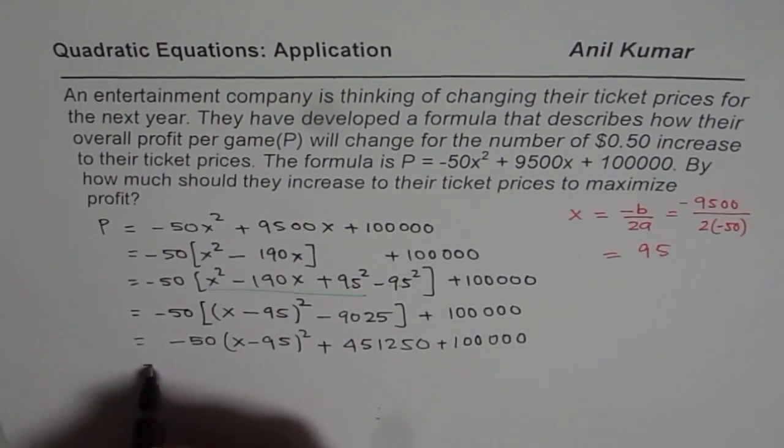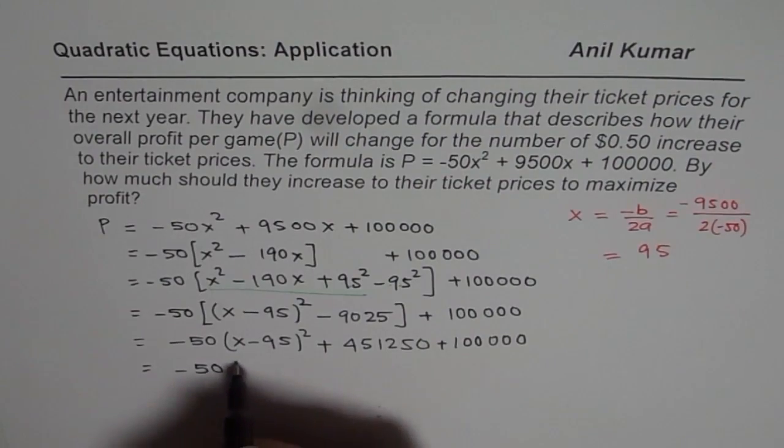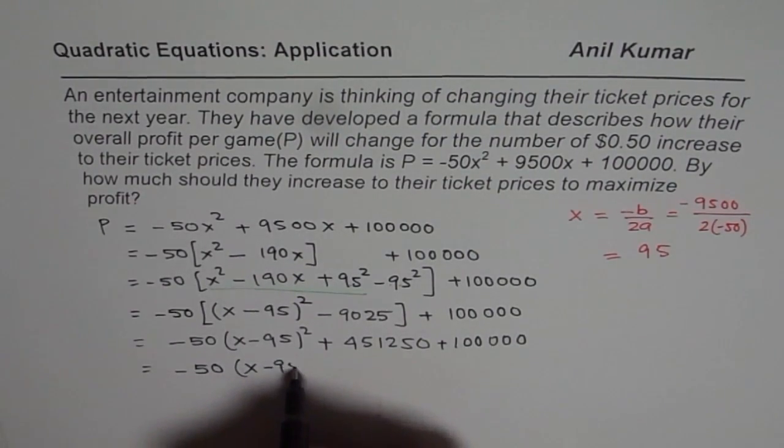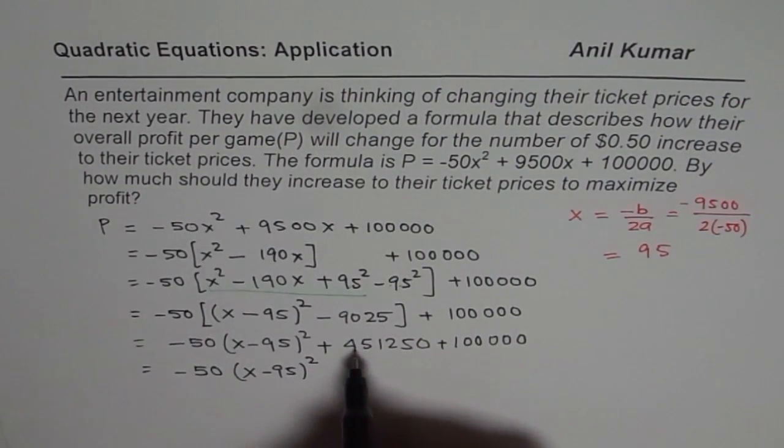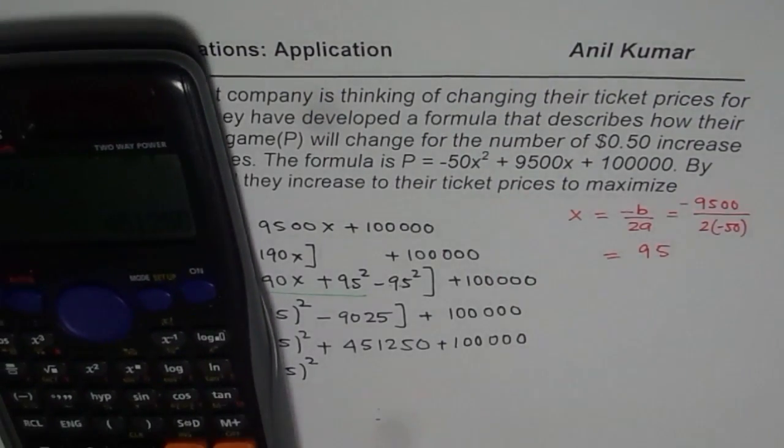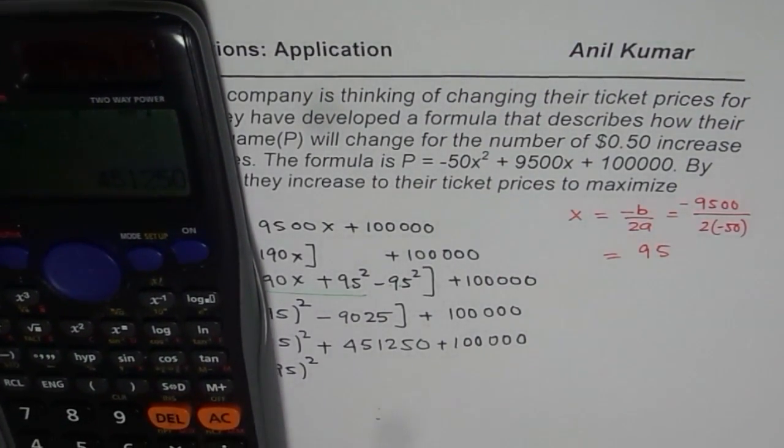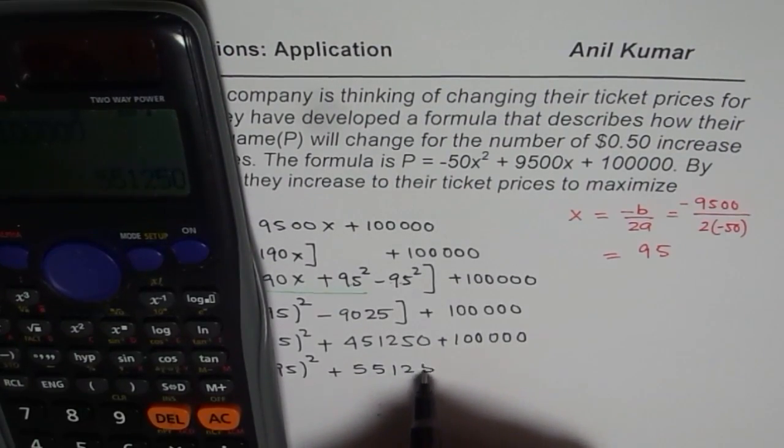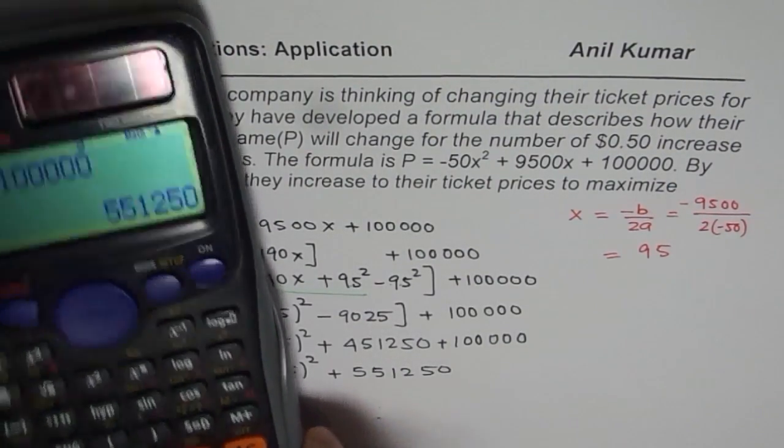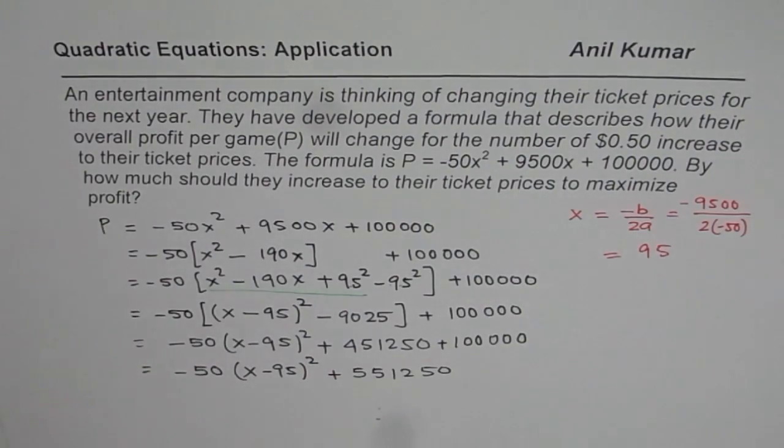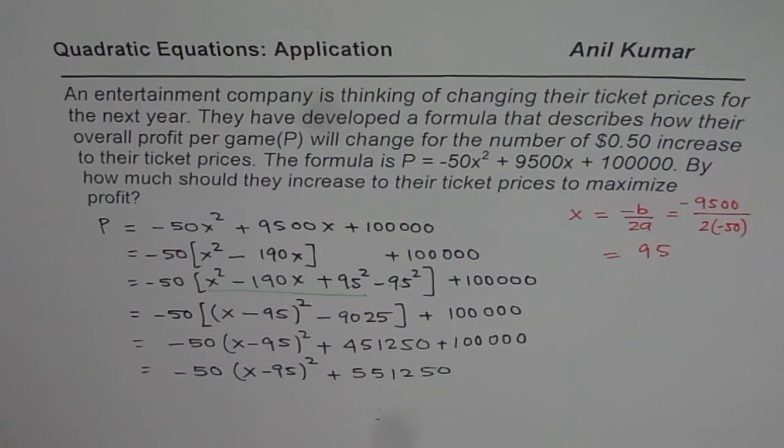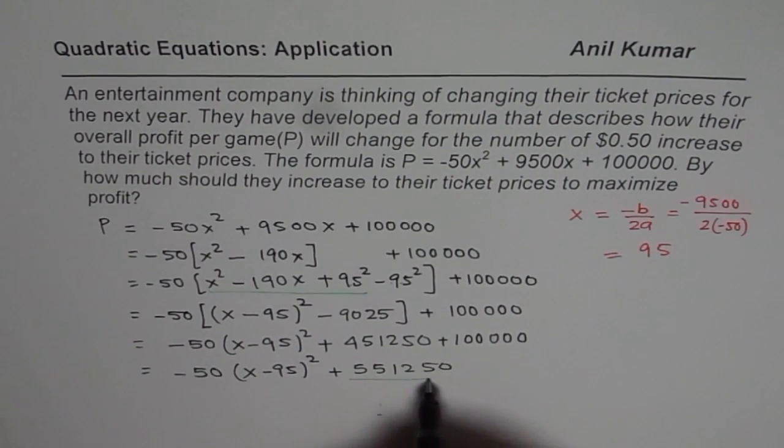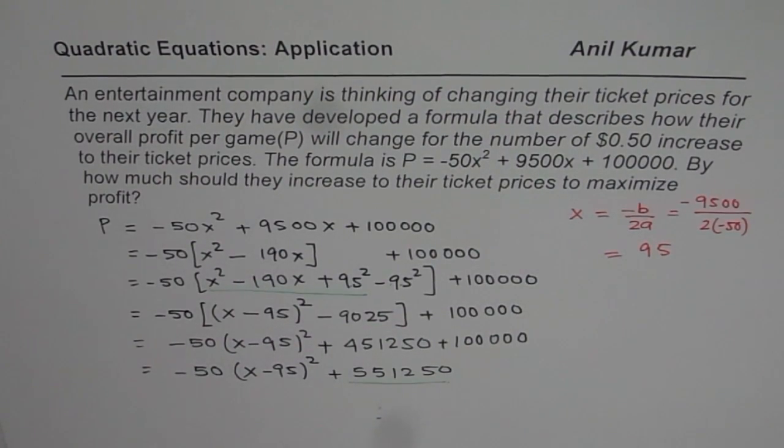Now you can add this up. So you get minus 50, x minus 95 whole squared. And we will add 100,000 to the number we had. So we will do plus 451250 equals. So we get plus 551250. I know that was an easy addition, but when you are using calculator you are just using it. Just use till the end. Be sure that you are getting absolutely the right answer.